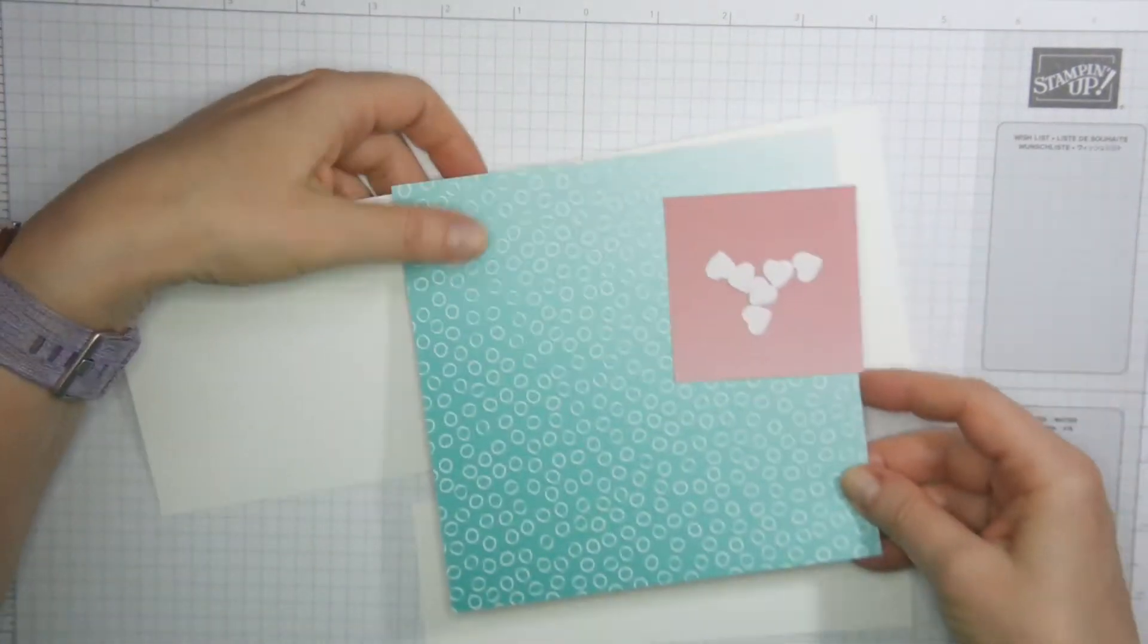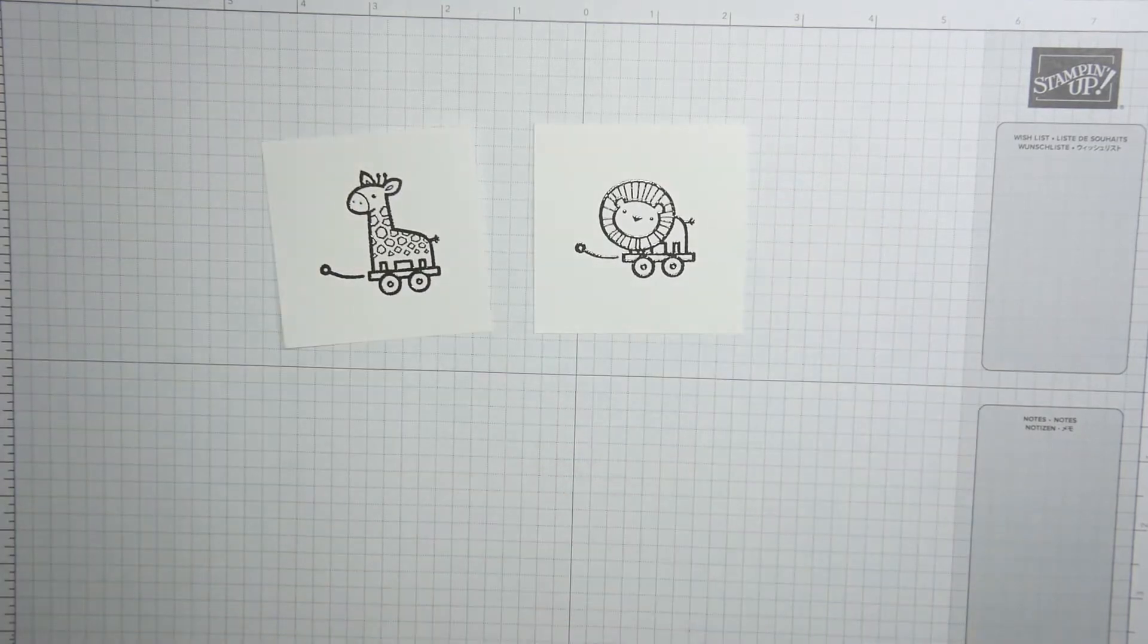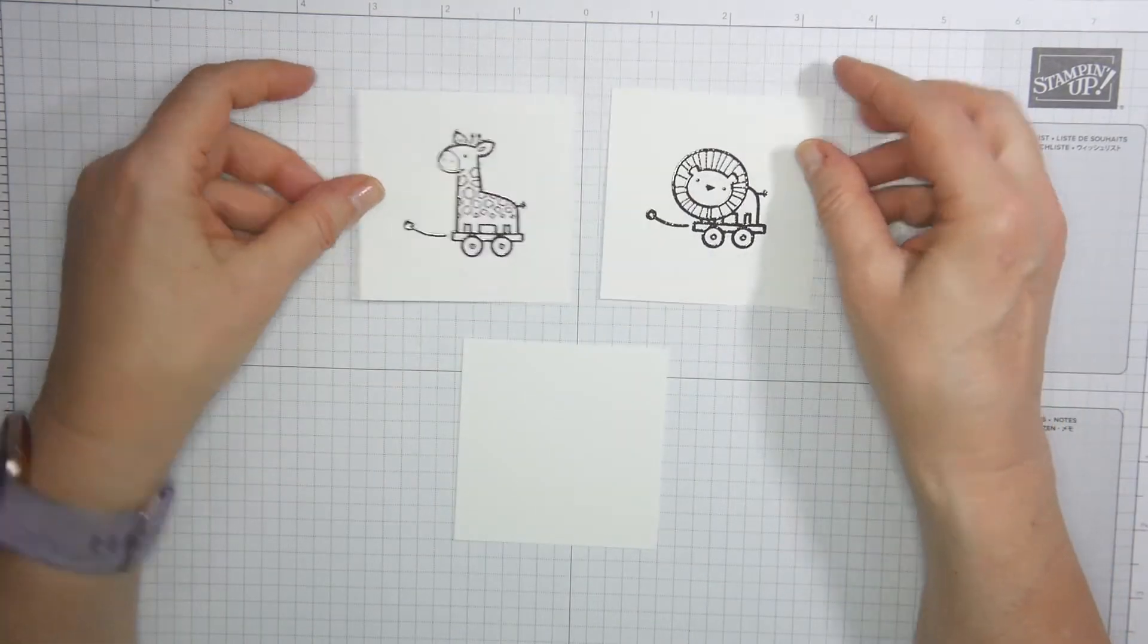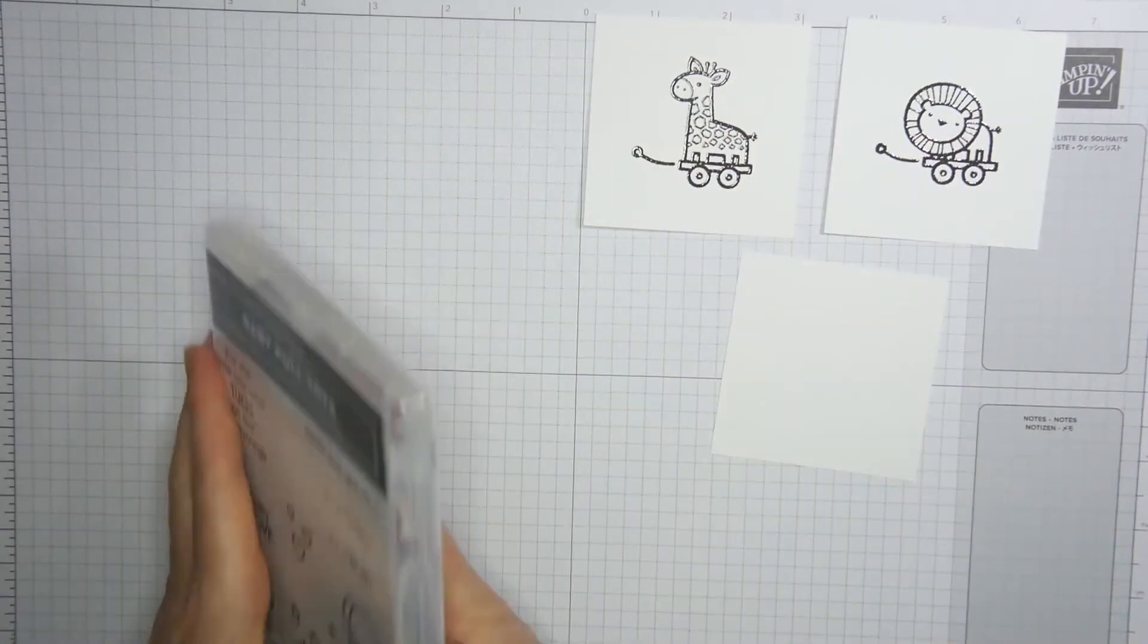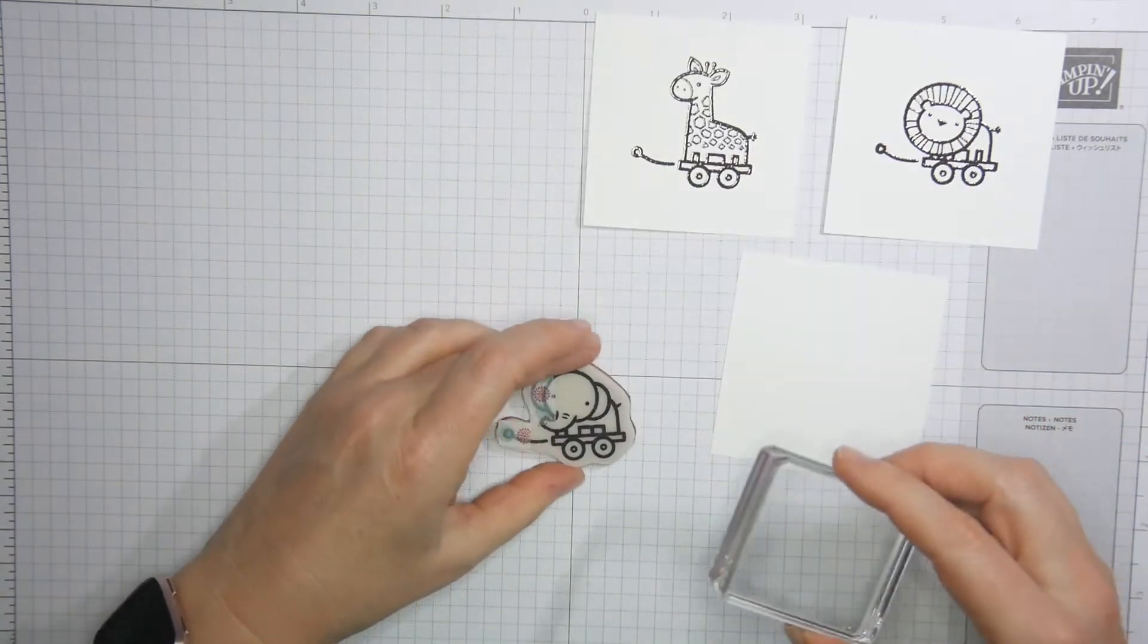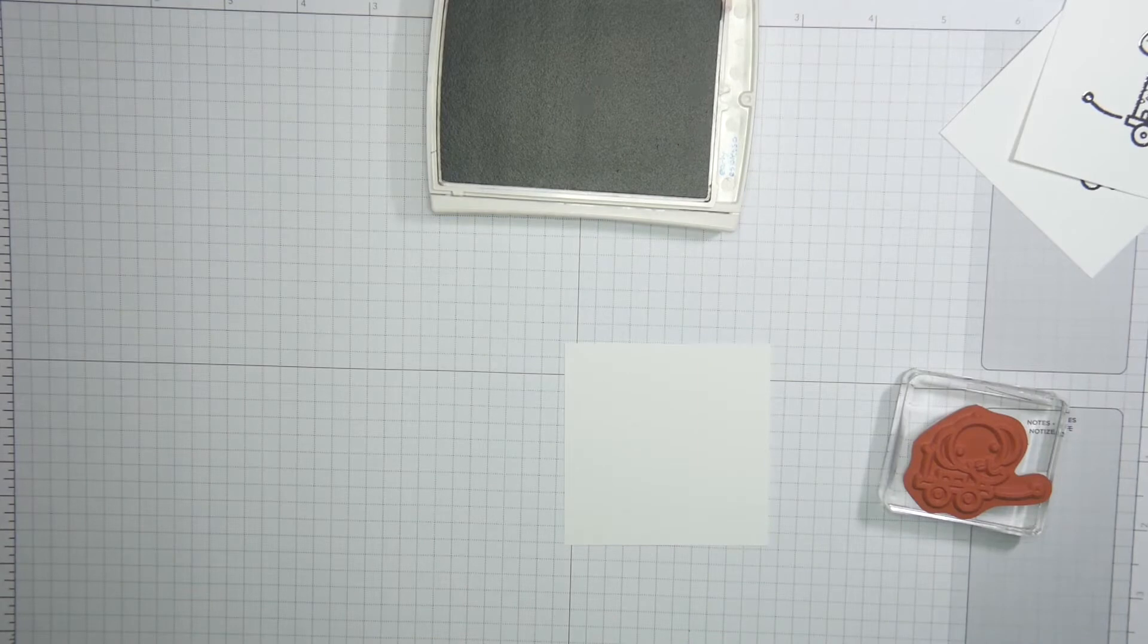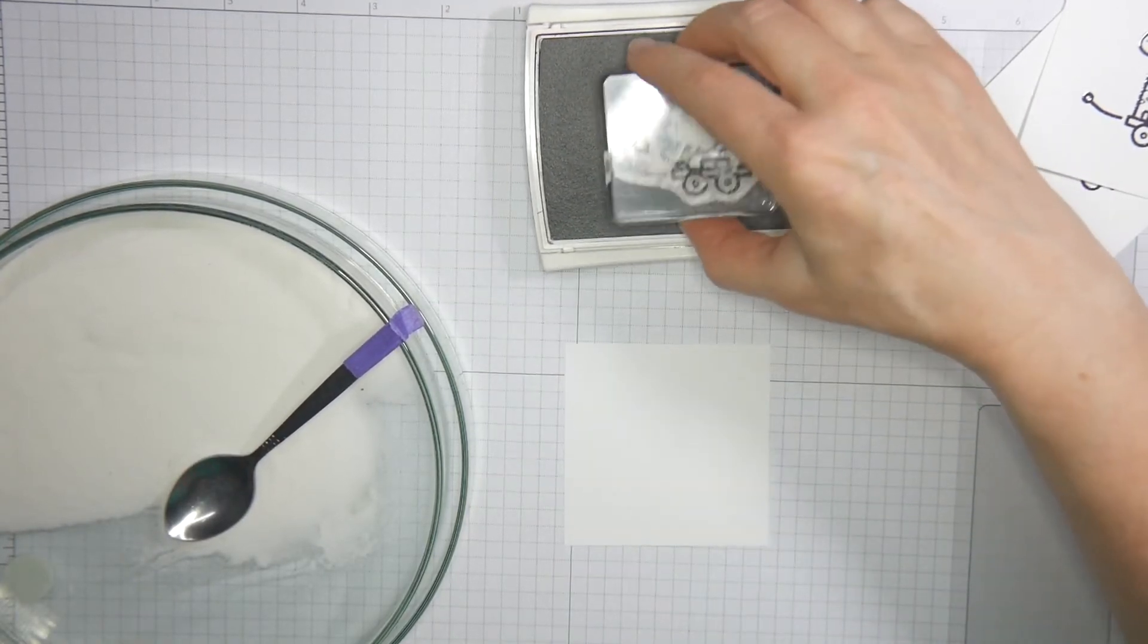Now first let me show you how to make the embellishments for the card. I've done some stamping to shorten the video a bit. I've taken three pieces of whisper white, three inches by three inches, and I've stamped my images and heat embossed them. I always stamp in early espresso because I think that's a beautiful color. And I'm going to heat emboss it with clear embossing powder.